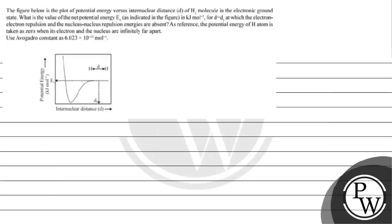Hello, Bacho. Let's read this question. The question says figure below is the plot of potential energy versus inter-nuclear distance d of hydrogen molecule in the electronic ground state. What is the value of net potential energy E0 as indicated in the figure in kilojoule per mole? d equals T0 at which electron repulsion and nuclear repulsion are absent. As reference, potential energy of hydrogen atom is taken as zero when its electron and nucleus are infinitely far apart.